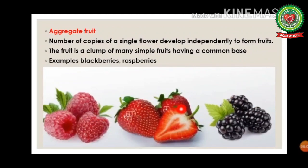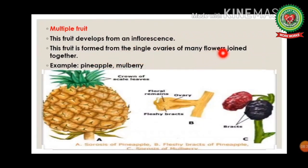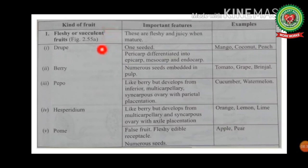An aggregate fruit develops from a number of carpels of a single flower that develop independently to form fruits. It is a cluster of many simple fruits having a common base. Examples are blackberries, raspberries, and strawberries. A multiple fruit develops from an inflorescence and is formed from the ovaries of many flowers joined together. Examples are pineapple and mulberry.